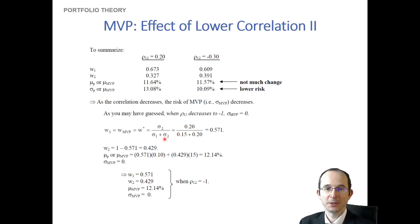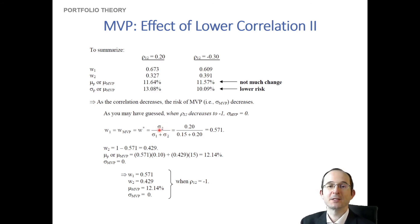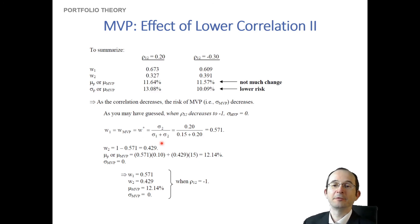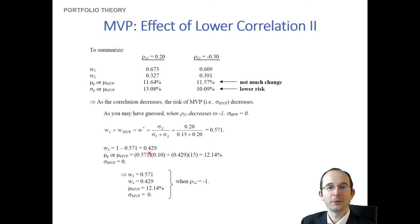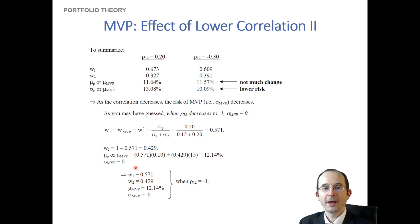Let's actually plug that into the formula. Taking the derivative of the portfolio variance formula with respect to weights and plugging in negative one for the correlation, we see that the weight on the first asset would be 0.57 and therefore the weight on the second asset would be 0.43. The expected return on the portfolio would be about 12.4% and the standard deviation would be zero.